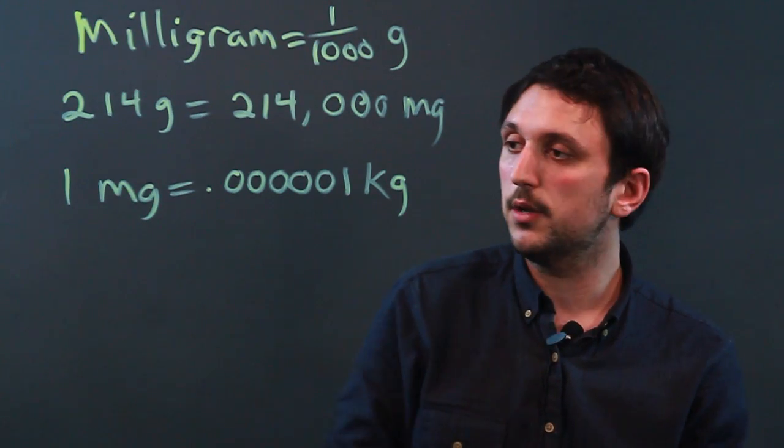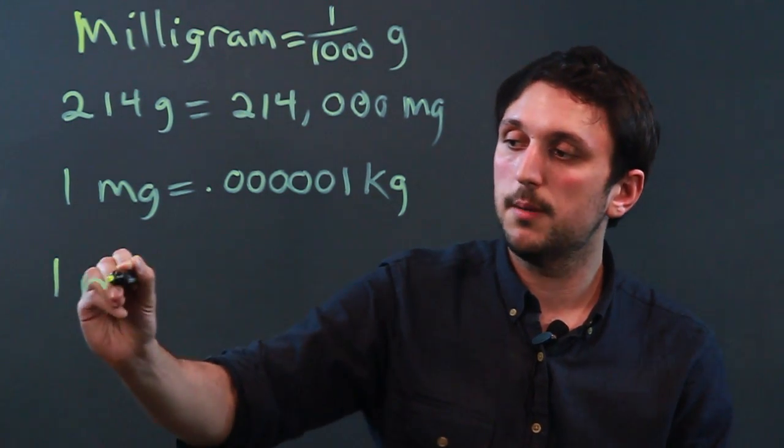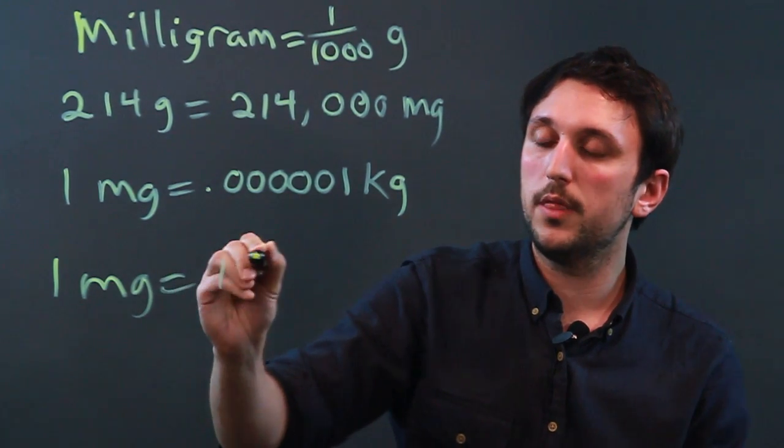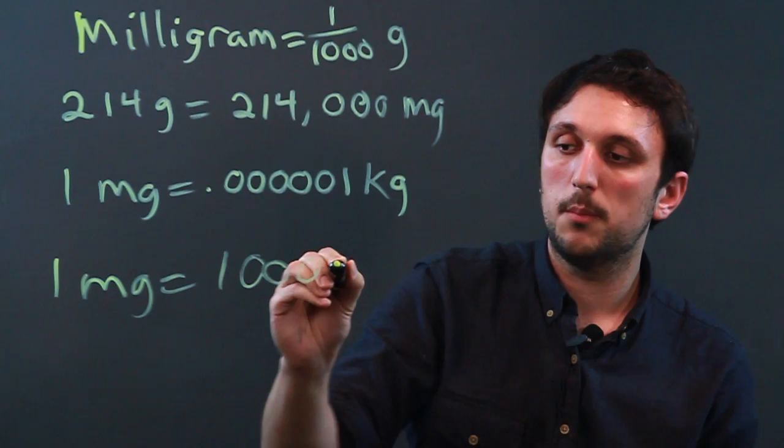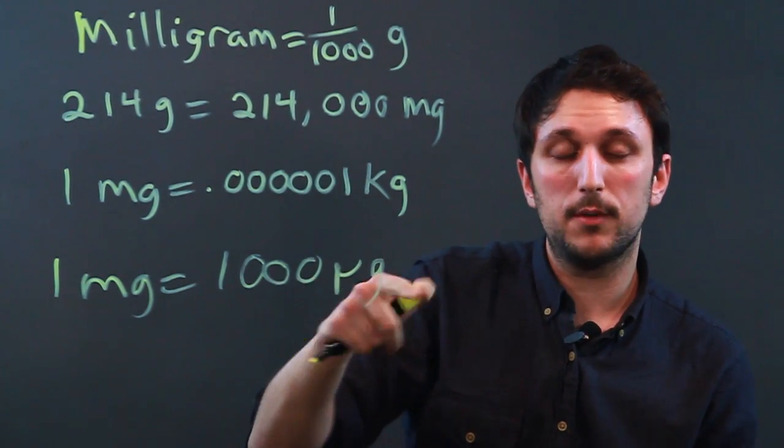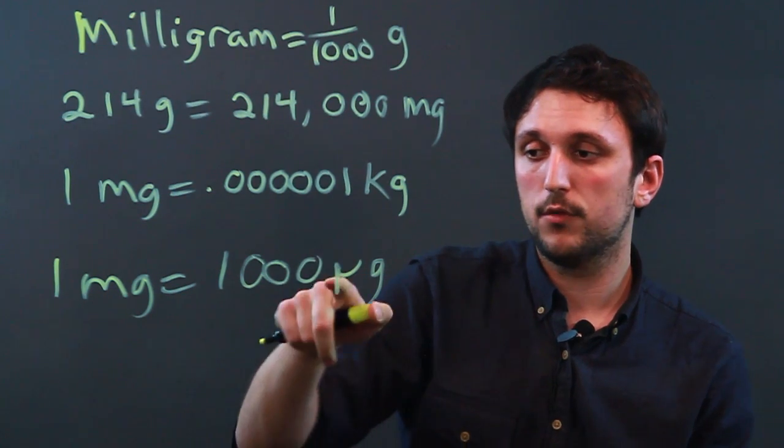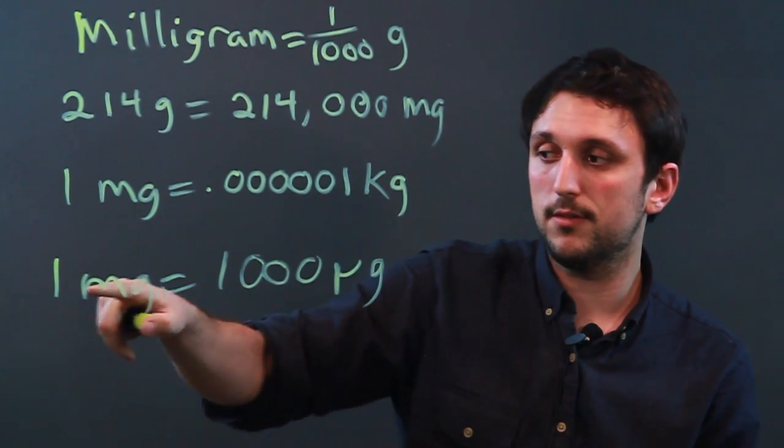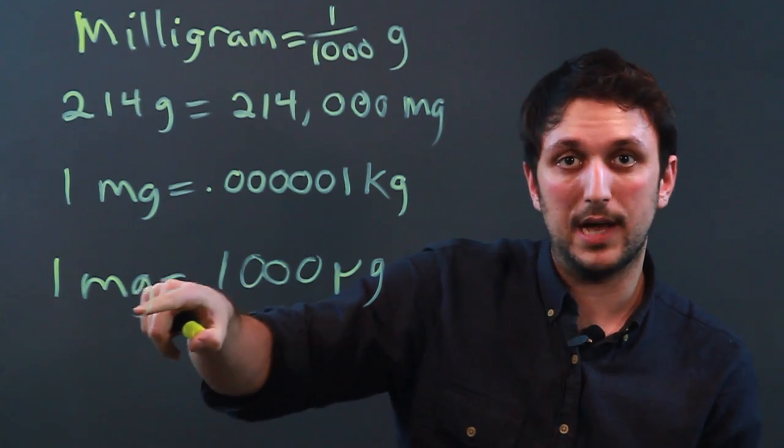The other common ones we might deal with are one milligram would equal one thousand micrograms. A microgram is one millionth of a gram, so a thousand millionths is like saying one milligram or one thousandth of a gram.